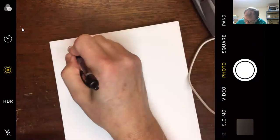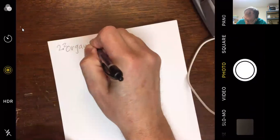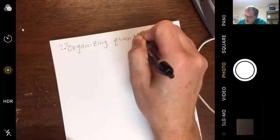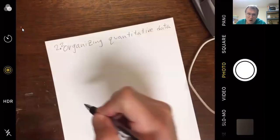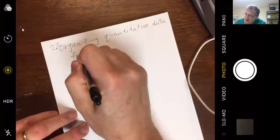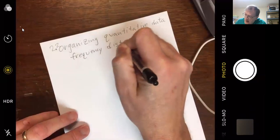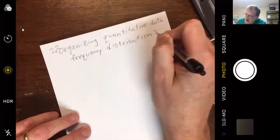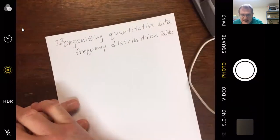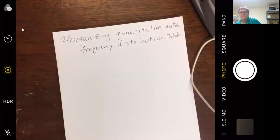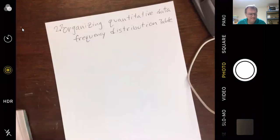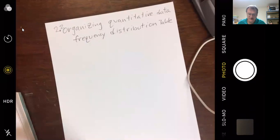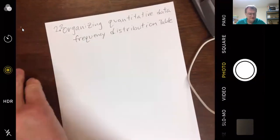So, organizing quantitative data. 2.2. We will, it's going to be very similar. A lot of similarities to 2.1, but there are some important differences as well. There'll be a frequency distribution table.